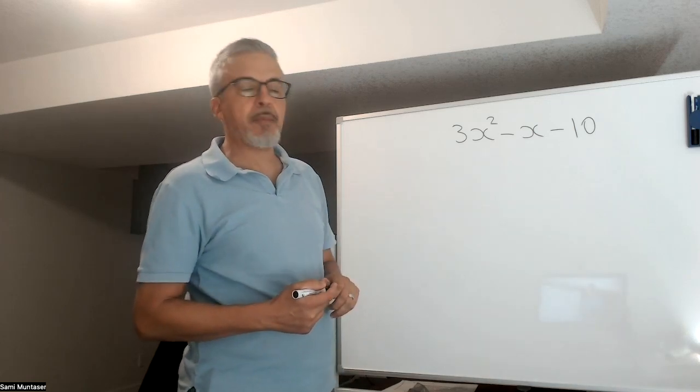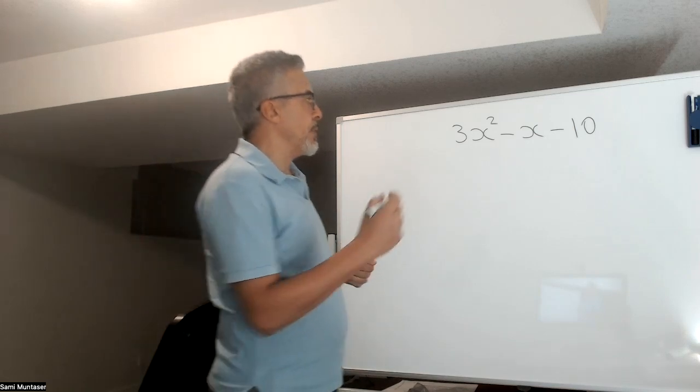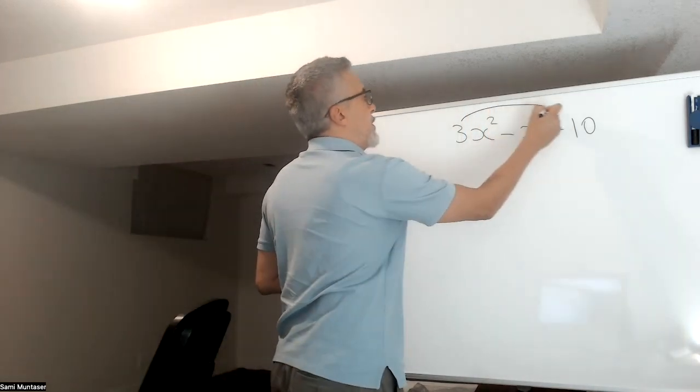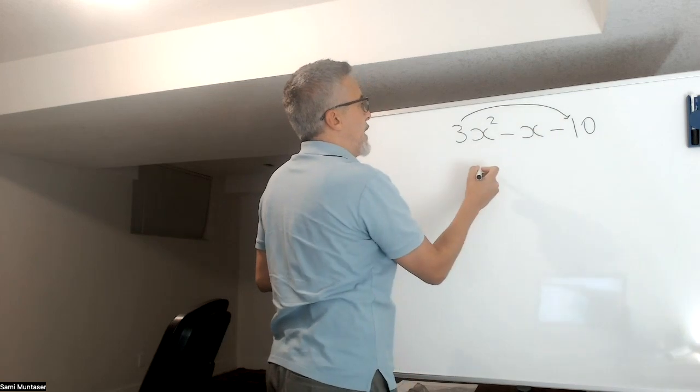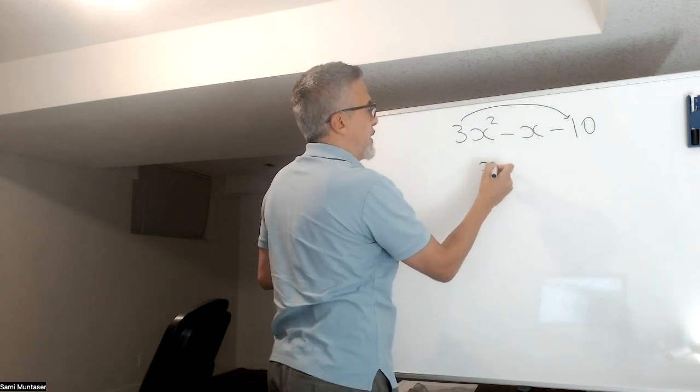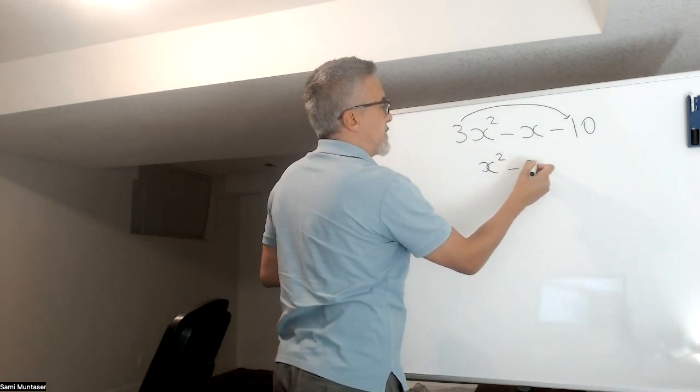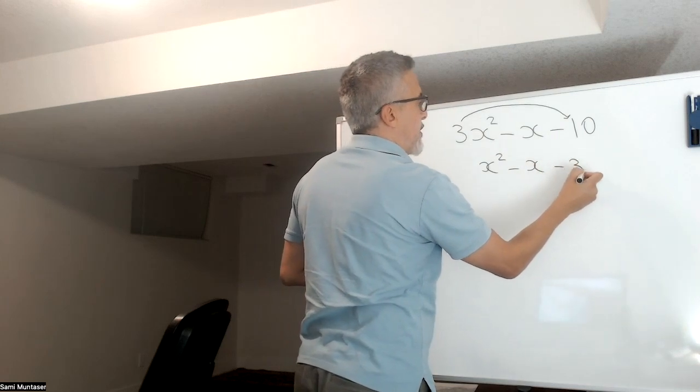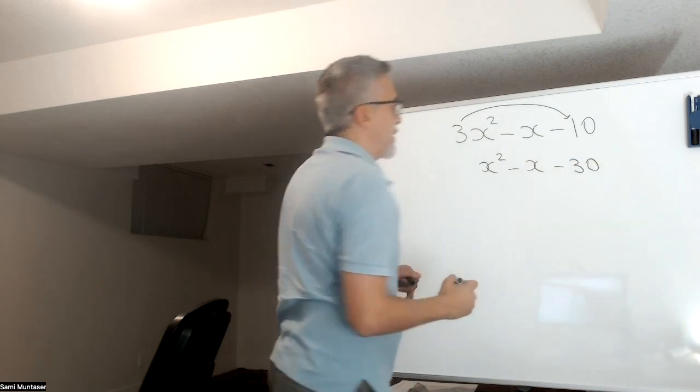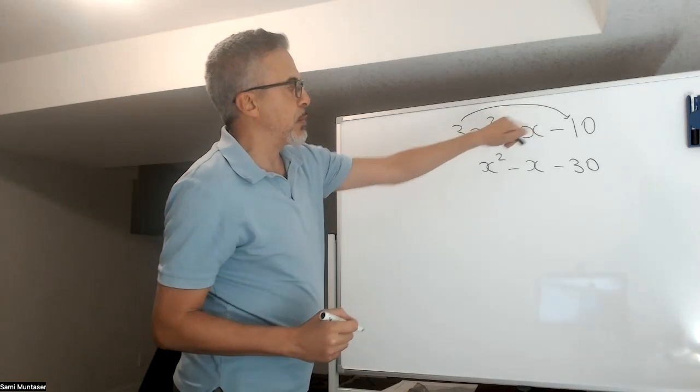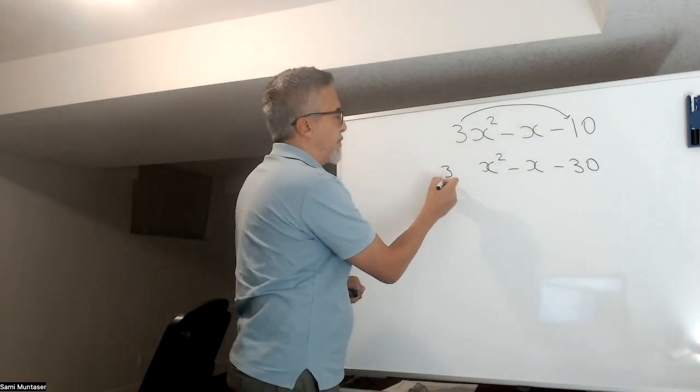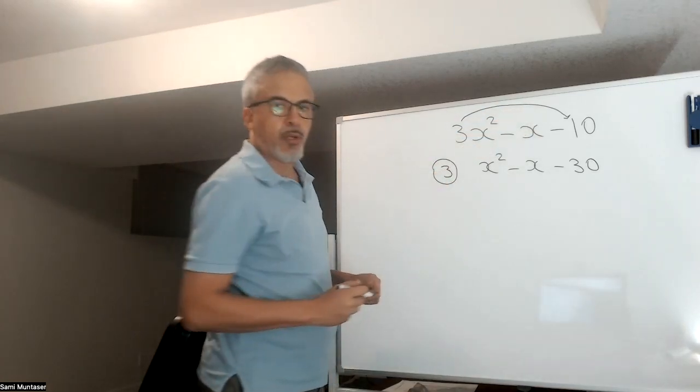So what do we do with this method here? The first thing we do, we multiply the three into the negative ten right here, and we rewrite the equation as x squared minus x minus 30. But this three that I multiplied into here, I have to come back to it later.